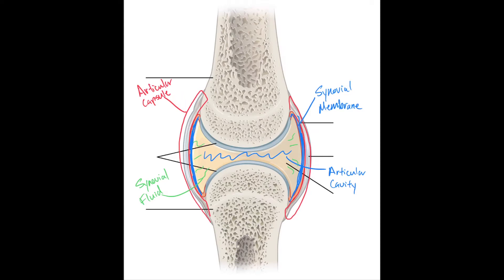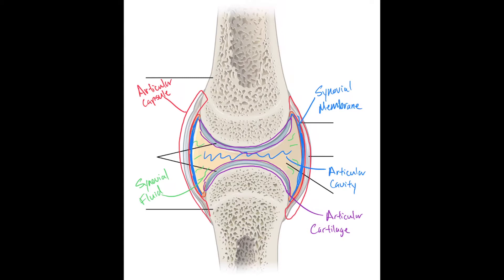The last part of a synovial joint is the cartilage located at either end of the bones — this is called articular cartilage. The articular cartilage lines the articular surfaces of the joint. These cartilages are actually hyaline cartilages, and they cover every point of articulation within synovial joints. Combined with synovial fluid, there isn't much wear and tear on the joints. Without articular cartilage, it would be bone on bone, which would be extremely painful and would degenerate the bone itself.